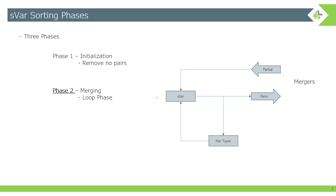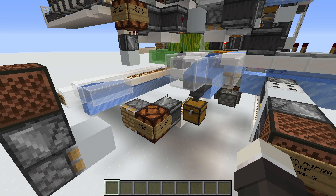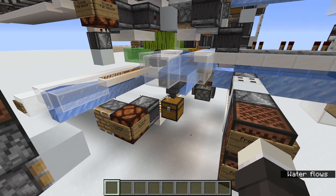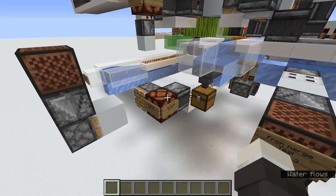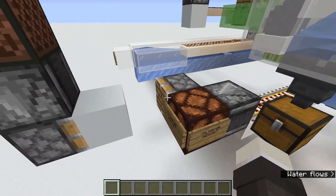The next phase is phase two: the merging phase. Now that we've eliminated all item types that have no pairs, we know definitively that things within the system will start getting paired. Of course, as we merge and reduce the sample size, we will eventually get boxes that no longer pair, and once that happens we will enter the third phase.